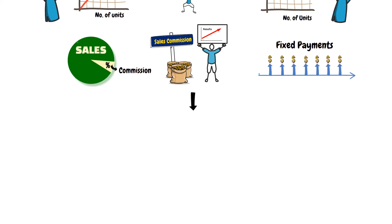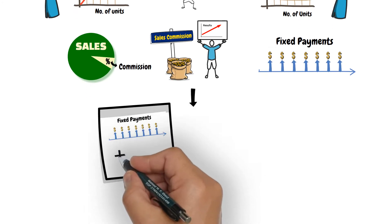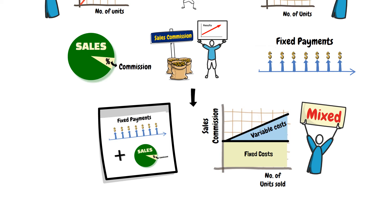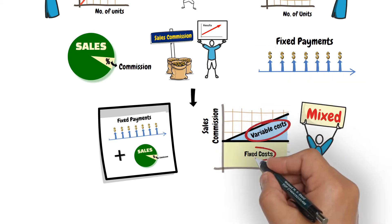If the commission includes a fixed monthly figure in addition to a percentage of the achieved sales volume, it is a mixed cost, which includes both variable and fixed elements.